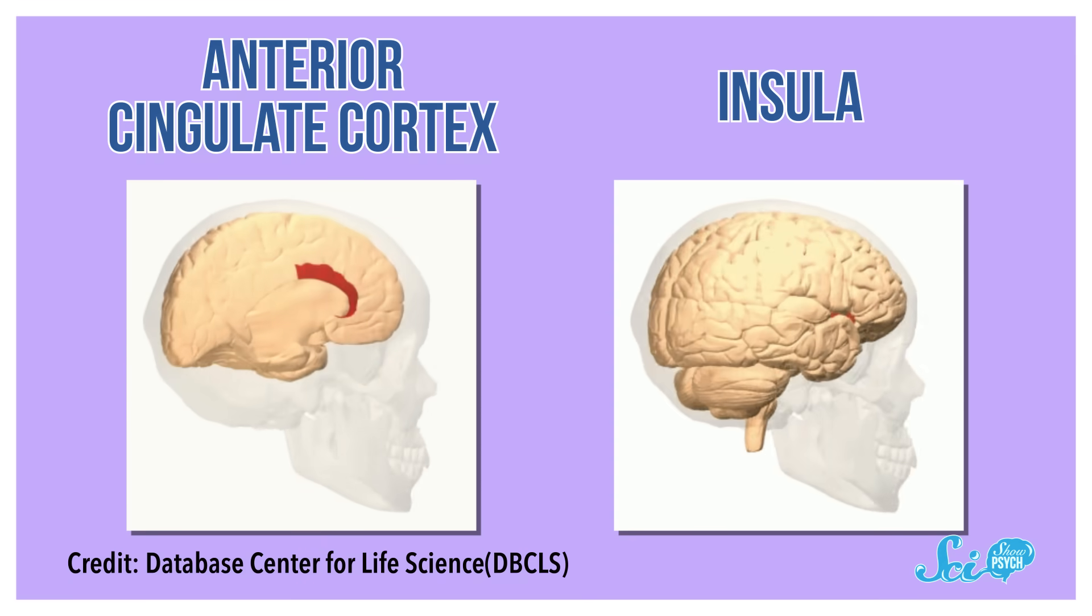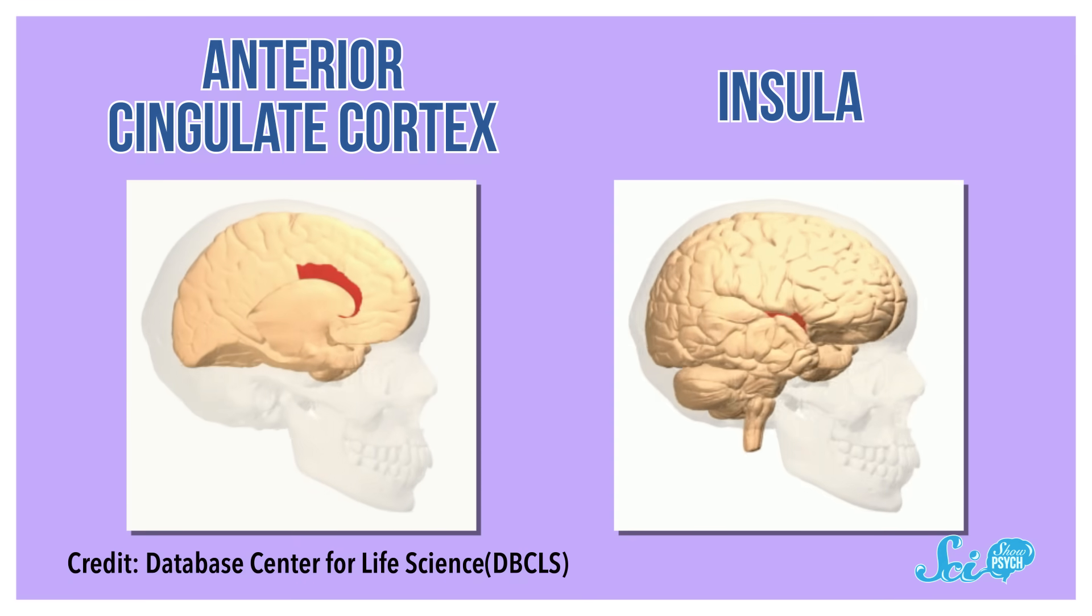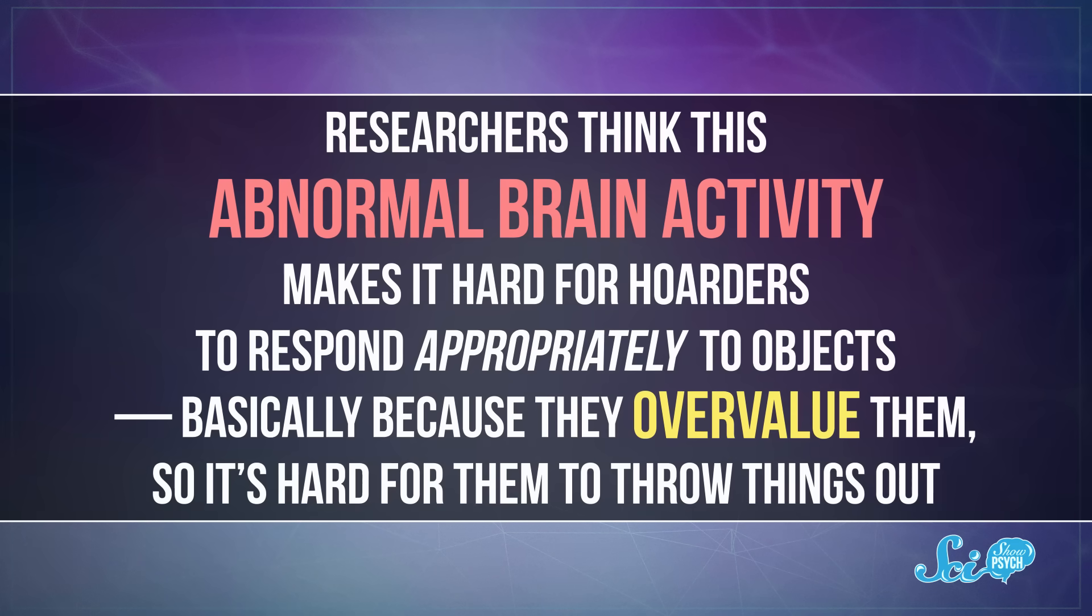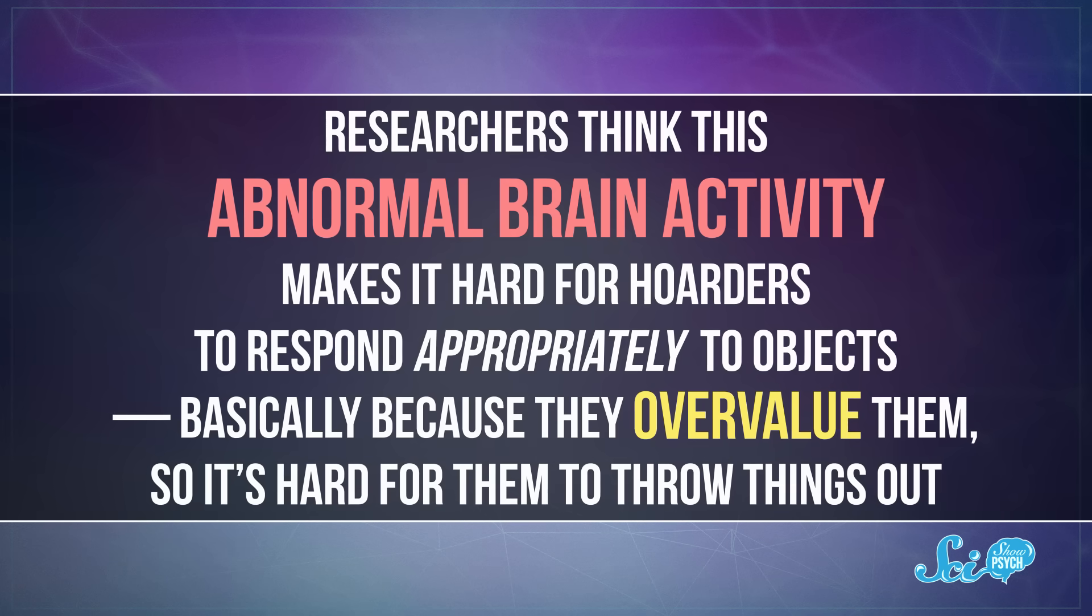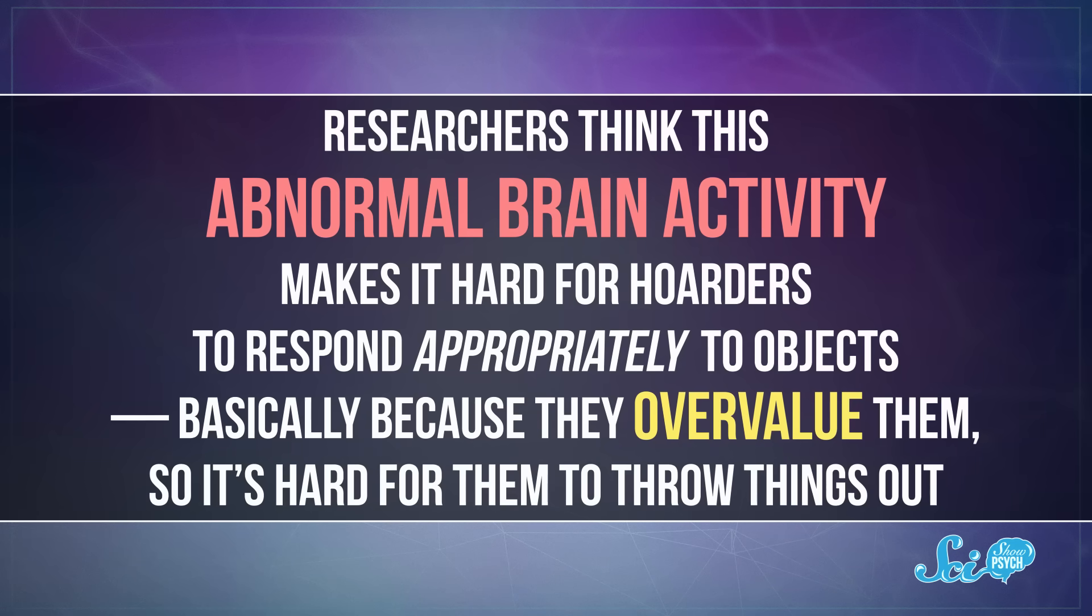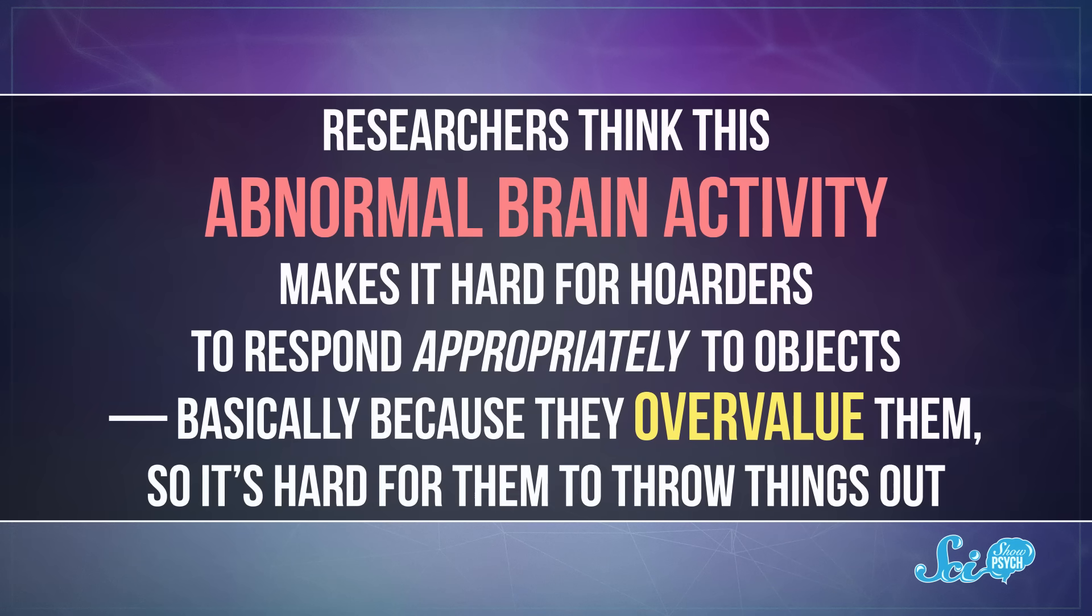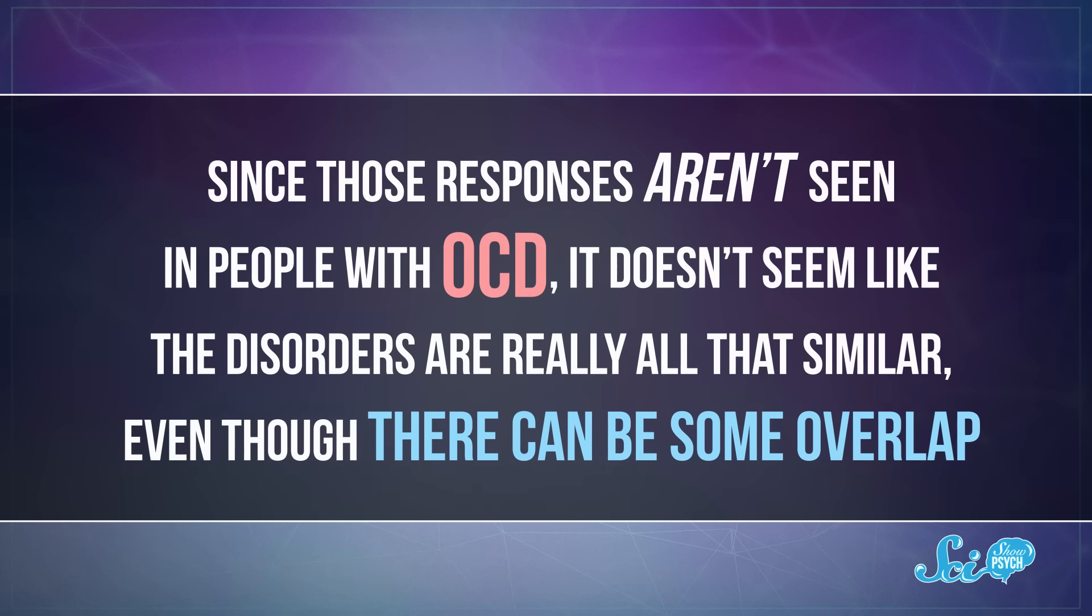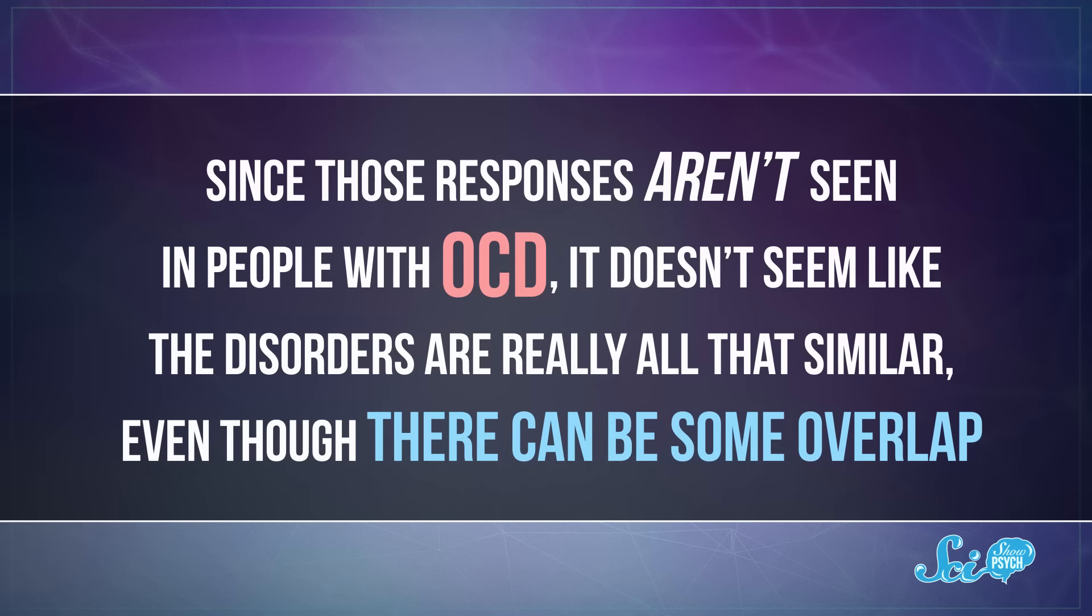These regions—the anterior cingulate cortex and the insula—are important for decision-making and emotion. Researchers think this abnormal brain activity makes it hard for hoarders to respond appropriately to objects. Basically because they overvalue them, so it's hard for them to throw things out. Since those responses aren't seen in people with OCD, it doesn't seem like these disorders are really all that similar, even though there can be some overlap.